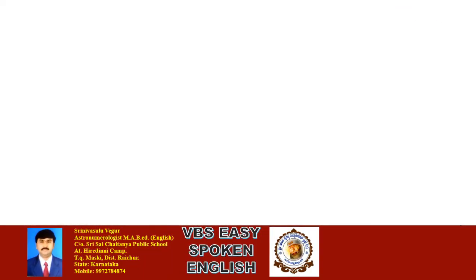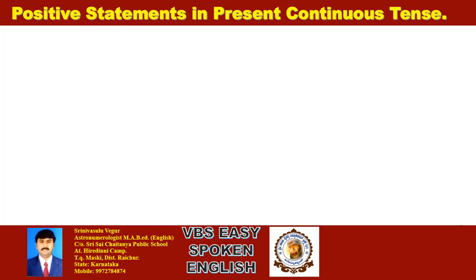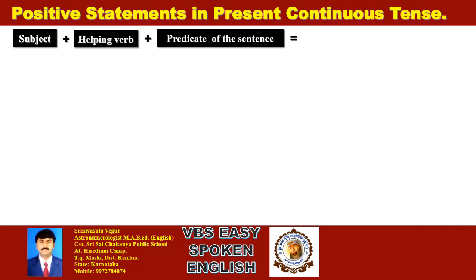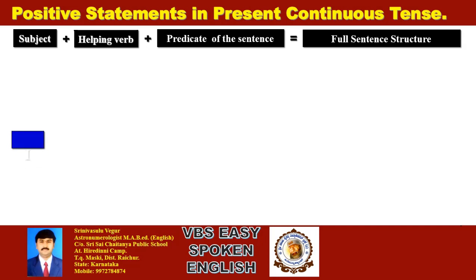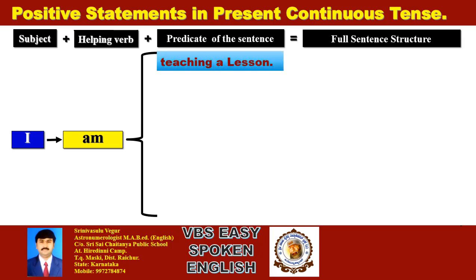Now, positive statements in present continuous tense. The structure is: Subject plus helping verb plus predicate of the sentence. Subject 'I', helping verb 'am', plus the verb with ING. In simple present tense we are not using the ING form, but in present continuous tense we need to add ING to each and every verb.